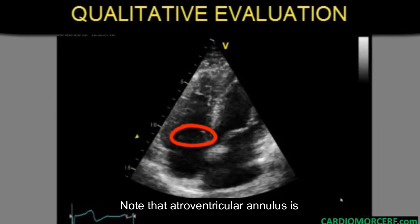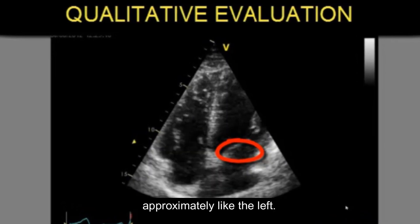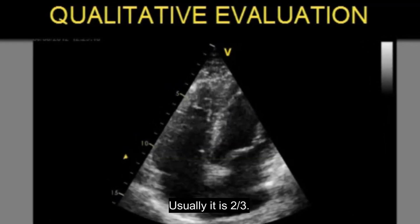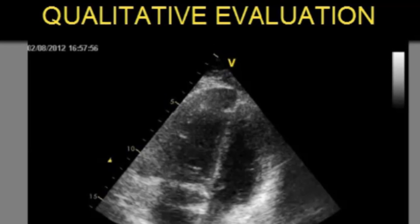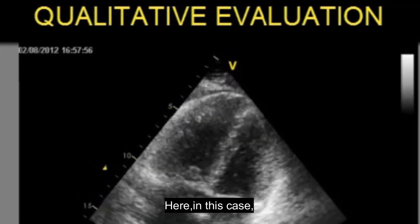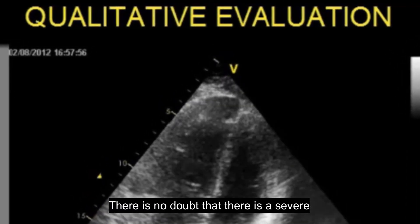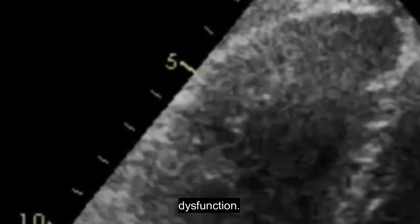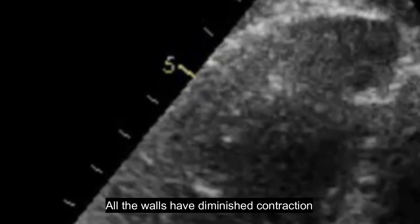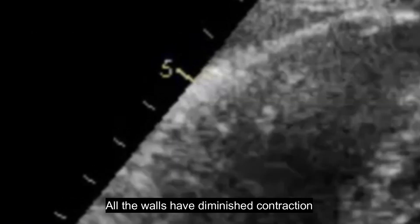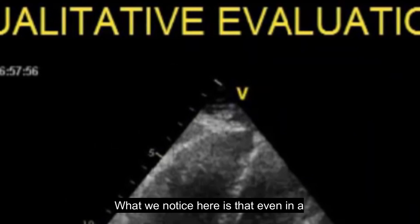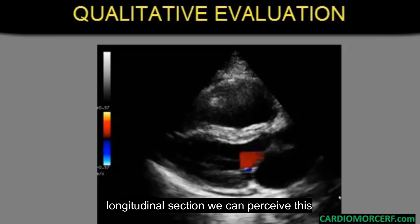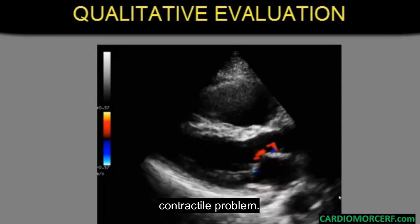Note that the atrioventricular annulus is approximately like the left; usually it is two-thirds of the left. Here, in this case, there is no doubt that there is severe, significant right ventricular systolic dysfunction — all walls have diminished contraction. What we notice is that even in a longitudinal section, we can perceive this contractile problem.